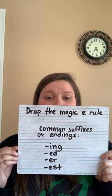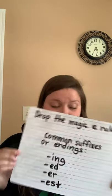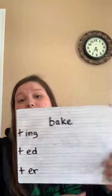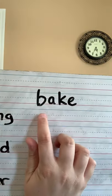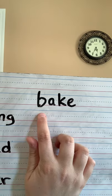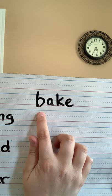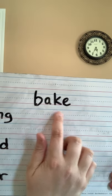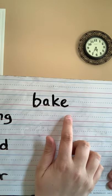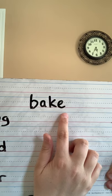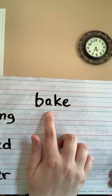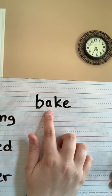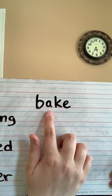Let's do one example together. So we have a magic E word here. Let's read this word. What's this word? Bake. Good job, it says bake. Remember, since there's a magic E at the end, it makes the vowel say its name.